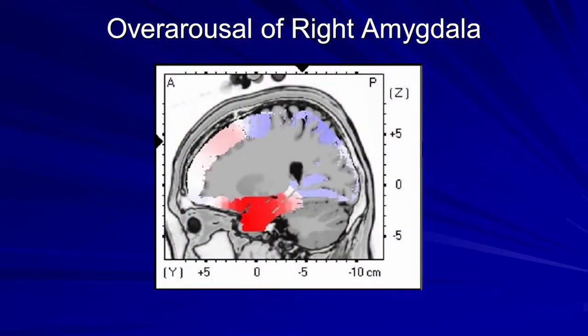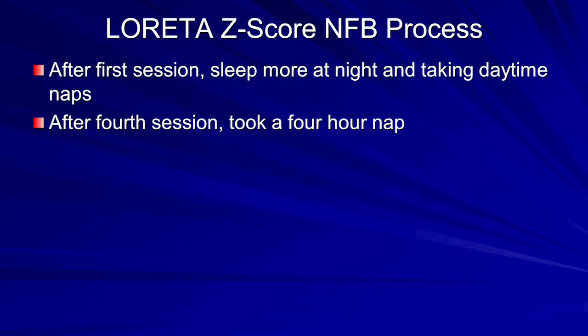He had over-arousal of his right amygdala — that red means it's above average. The first session was interesting: his mother said he slept a lot after that session and he took naps. He never takes naps, he never slows down. After the fourth session, it was like a four-hour nap. I think it's the brain just kind of letting go — 'I don't have to be on alert anymore. In fact, a nap sounds kind of nice.'